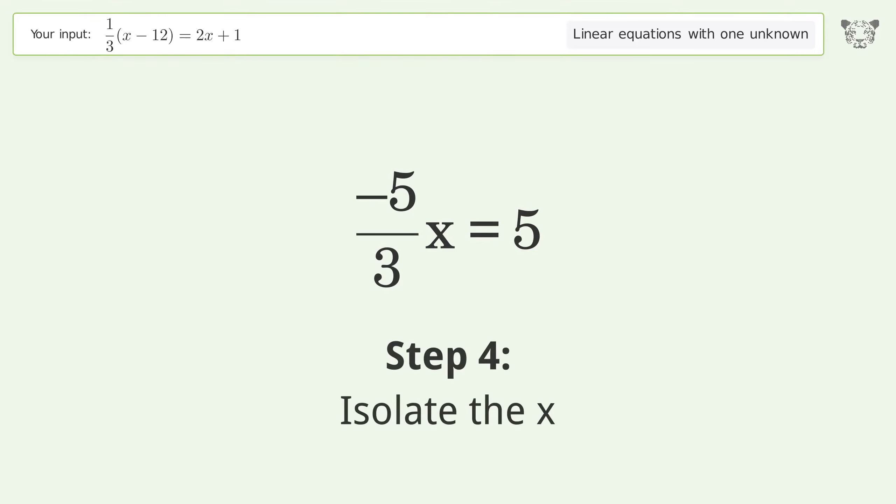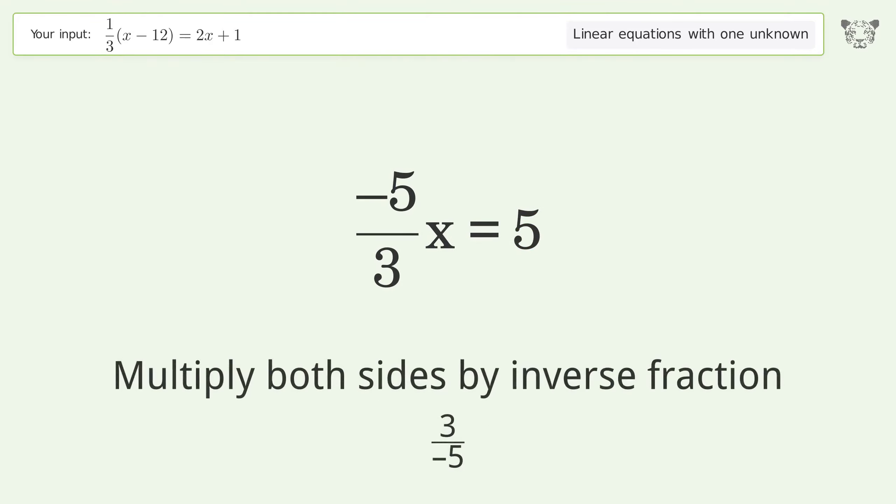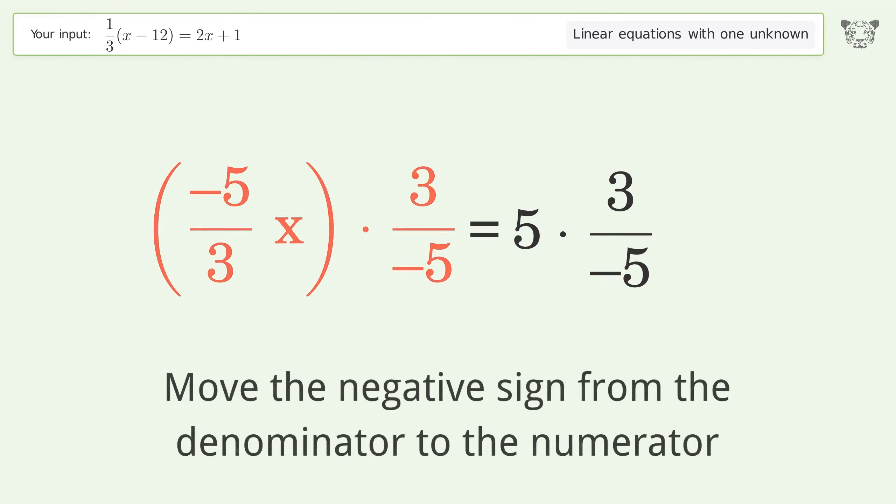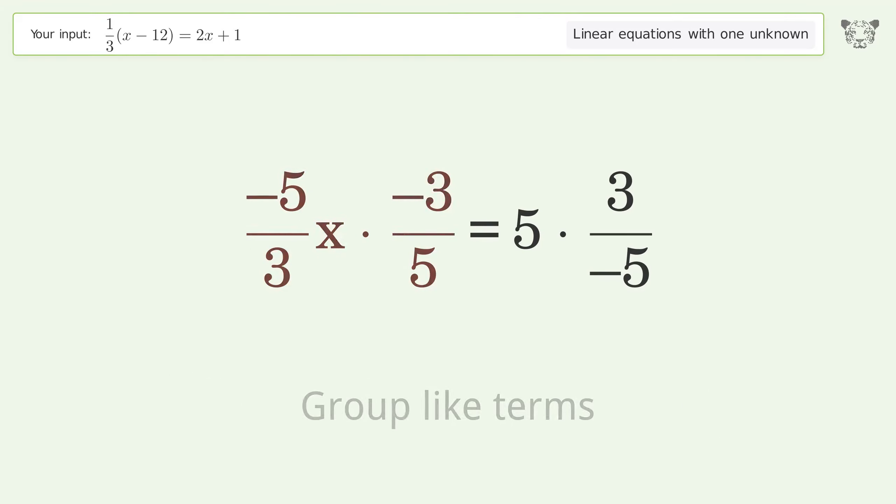Isolate the x. Multiply both sides by the inverse fraction 3 over negative 5. Move the negative sign from the denominator to the numerator. Group like terms.